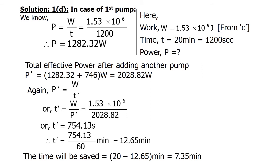For part D, we calculate the time saved when another engine is added to the first pump. We already have the work value of 1.53 × 10⁶ joule. The first pump takes 20 minutes to empty the well completely. Converting 20 minutes to seconds gives 1200 seconds. Using the formula P equals W by t, after calculation the power of the first pump is P equal to 1282.32 watt.